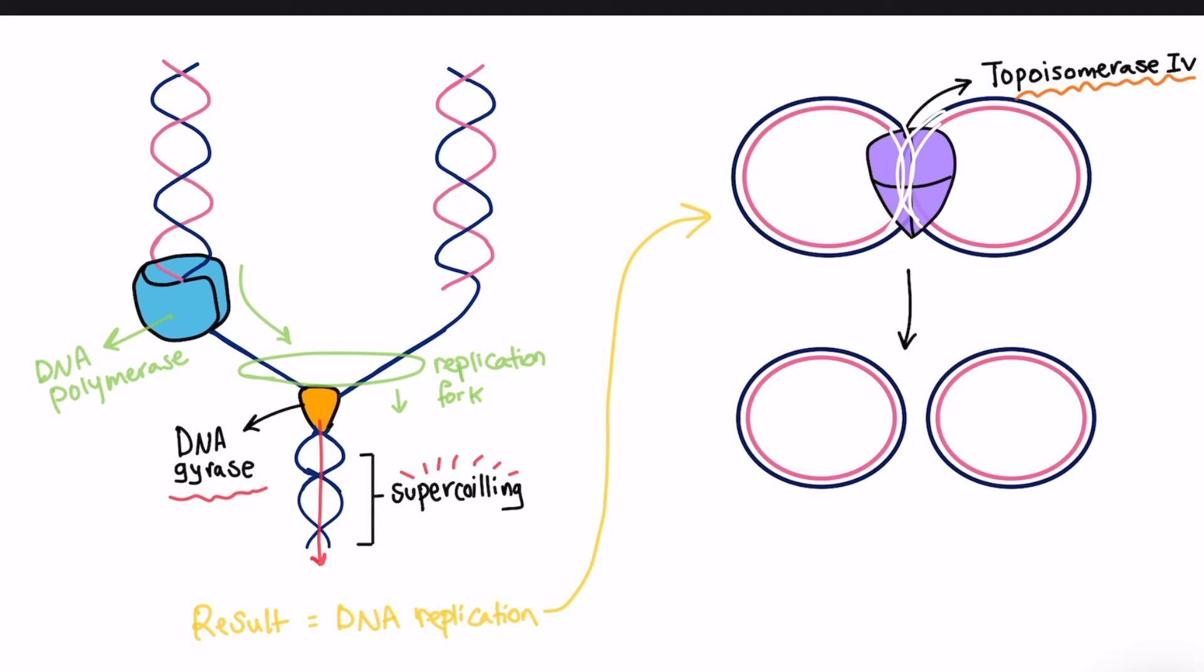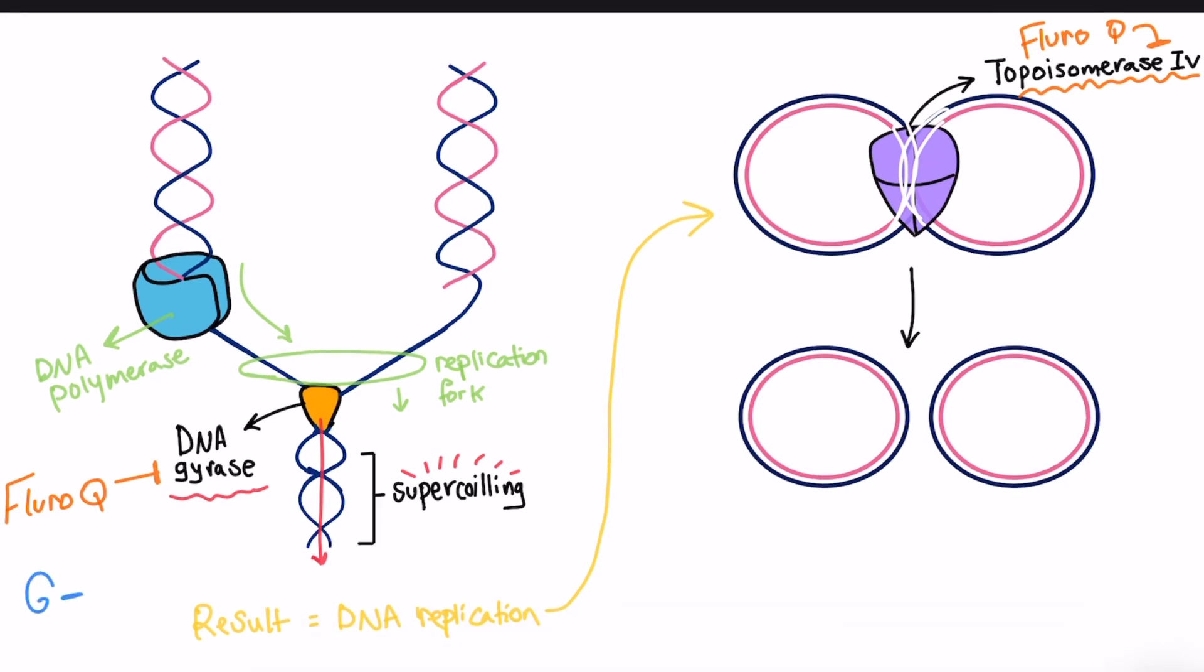So fluoroquinolones target these two enzymes, inhibiting the DNA replication and leading to no transcription and eventually bacterial cell death. More specifically, in gram-negative like E. coli and Salmonella, DNA gyrase complex is the main target of these drugs. Once the drug is bound to this complex, it stabilizes it, preventing the supercoiling removal and stopping the DNA replication continuance, which results in DNA breakage that is fatal to the cell.